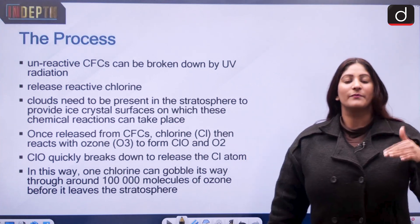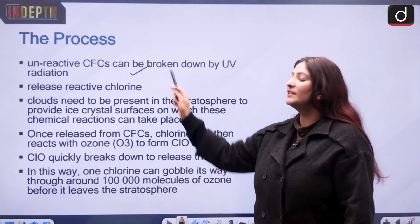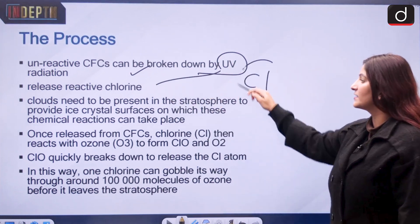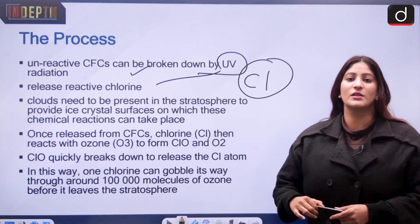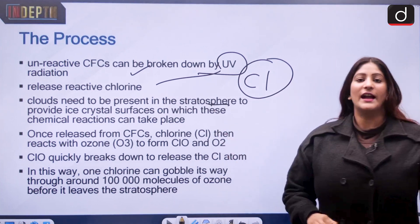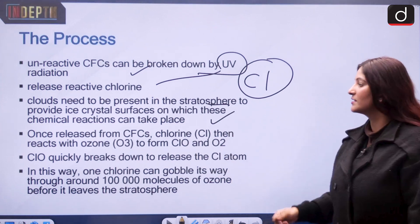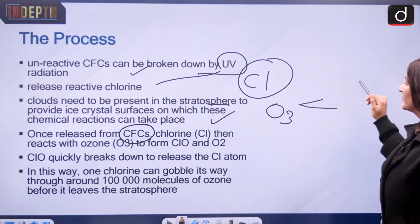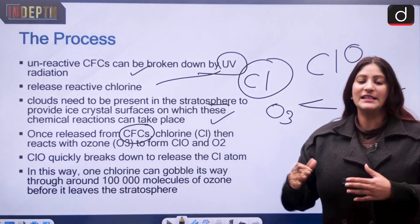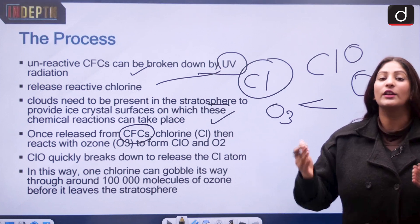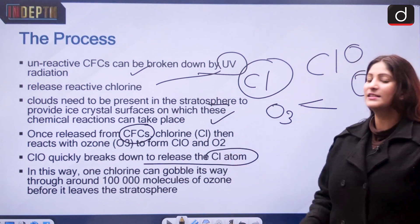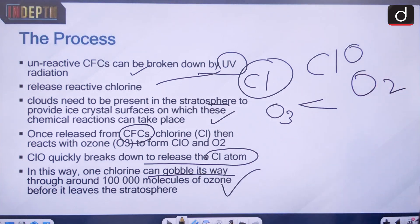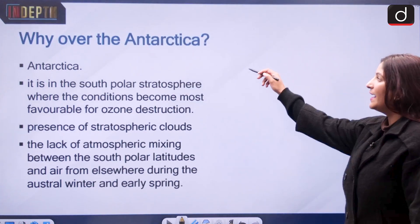CFCs are generally unreactive in the lower atmosphere, but once they reach the stratosphere, they can be broken down by harmful UV rays, releasing chlorine. For this process to occur, stratospheric clouds must be present to provide ice crystals on which the chemical reaction takes place. The released chlorine reacts with ozone, splitting it into O2 and chlorine oxide. These free chlorine atoms gobble up ozone, and one chlorine atom can destroy around 10,000 molecules of ozone before leaving the stratosphere.